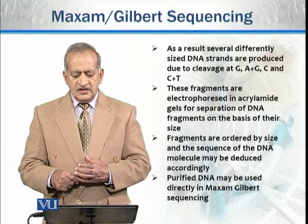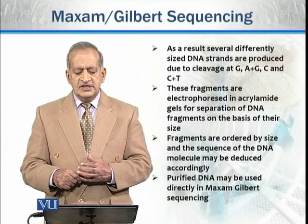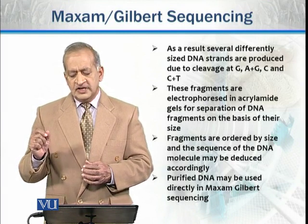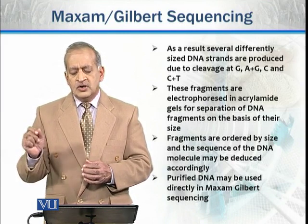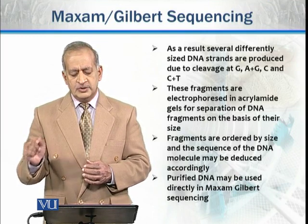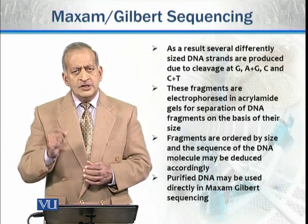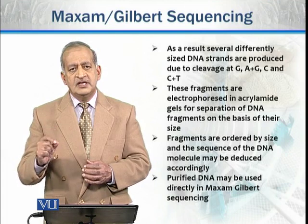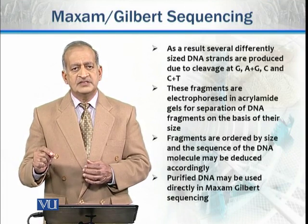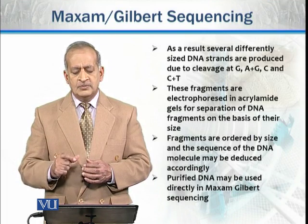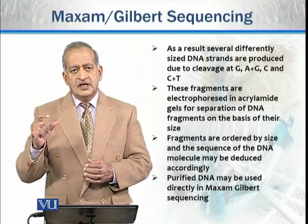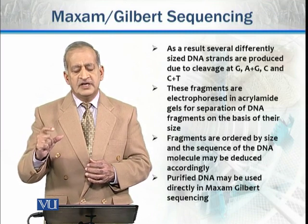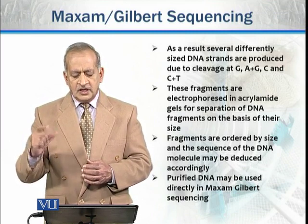As a result, several differently sized DNA fragments are produced due to cleavage, either at guanine, or adenine-guanine sites, or cytosine alone, or cytosine and thymine together. These fragments are separated using agarose gel electrophoresis, allowing us to order the sequence.